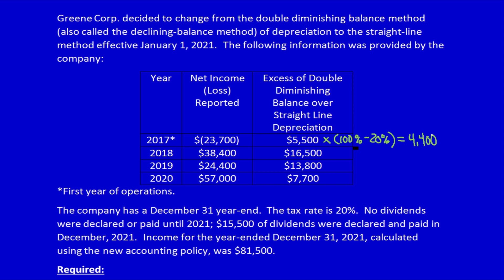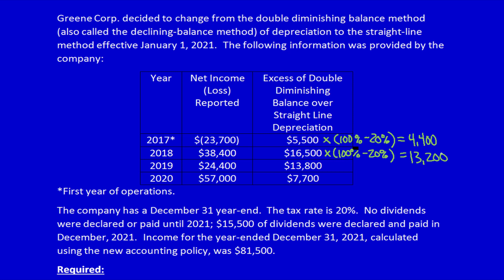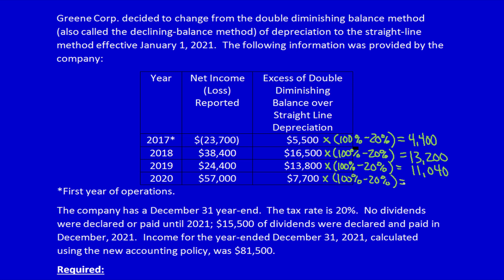In 2018, applying the same calculation — multiplying by (100% − 20%) — the after-tax change in income would be $13,200 higher. So net income would be $13,200 higher than the $38,400 actually reported. For 2019, the change would be $11,040. For 2020, the change would be $6,160 higher, meaning depreciation expense goes down by $7,700, income tax expense goes up by 20% of that, and net income goes up by $6,160.